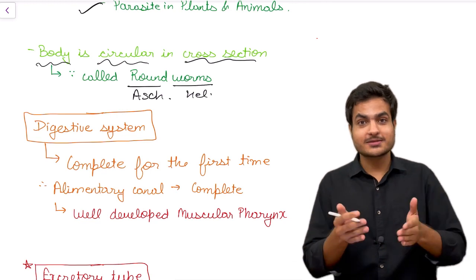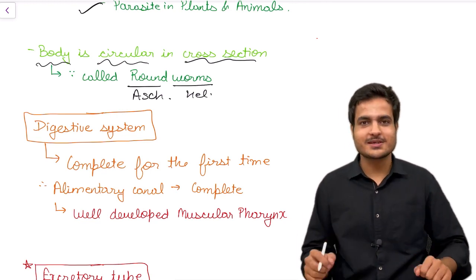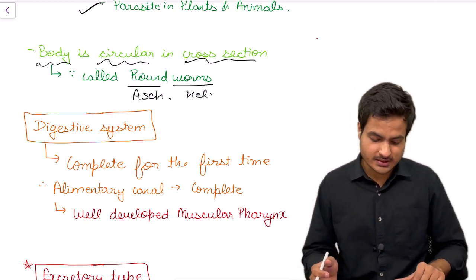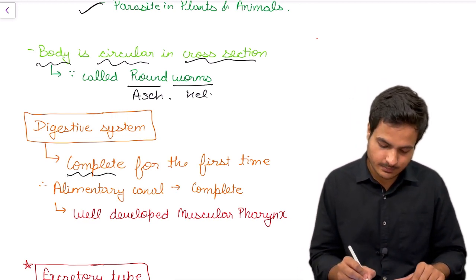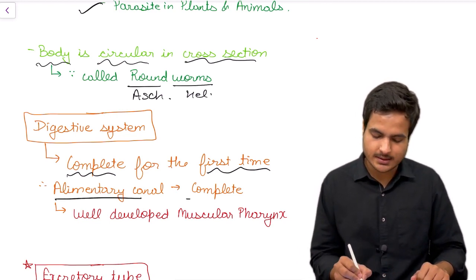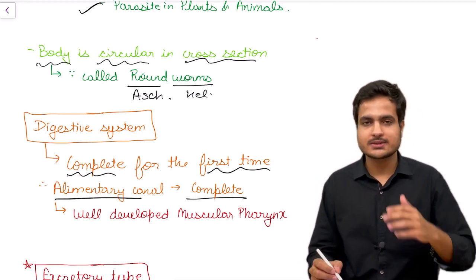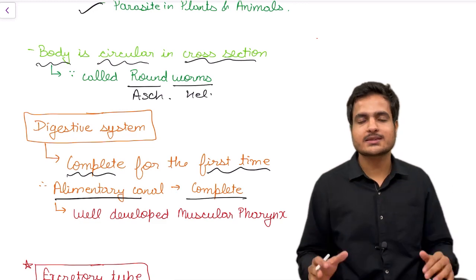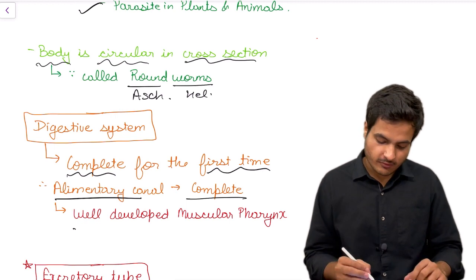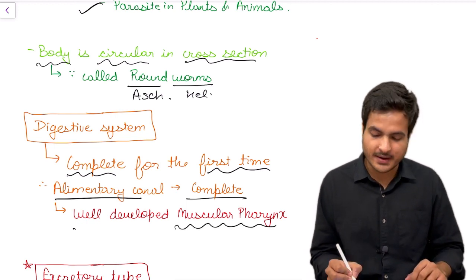Now let's talk about the digestive system, the only system which is fully developed in this phylum. This is a complete, for the first time this organ system and the alimentary canal is complete here. Alimentary canal starts from the mouth and